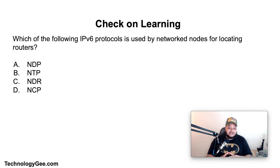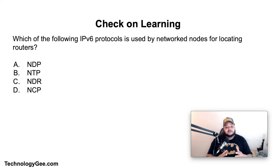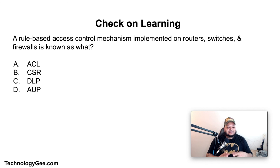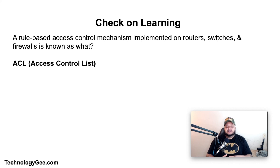Let's do some check on learning. First question: which IPv6 protocol is used by network nodes for locating routers — NDP, NDR, or NCP? The correct answer is the Neighbor Discovery Protocol (NDP). Second question: a rule-based access control mechanism implemented on routers, switches, and firewalls is known as what — an ACL, CSR, DLP, or AUP? The correct answer is an Access Control List (ACL).